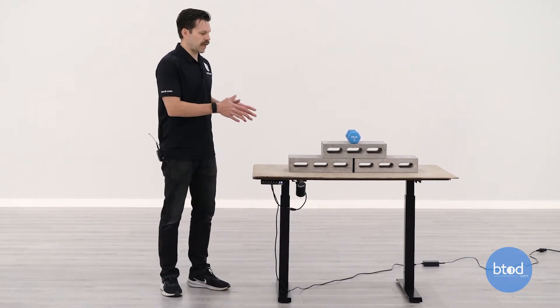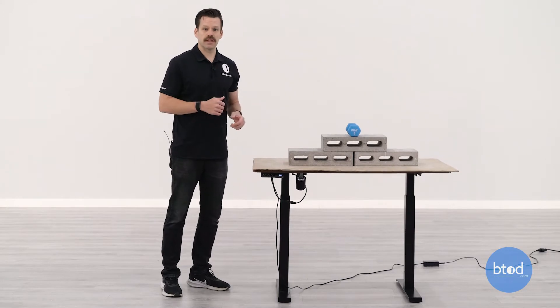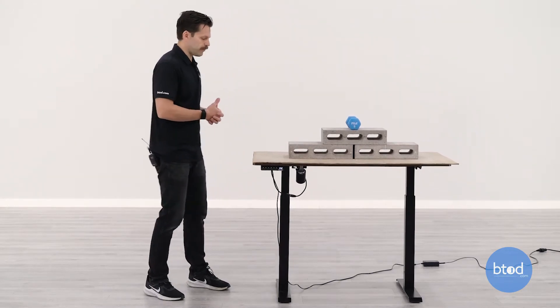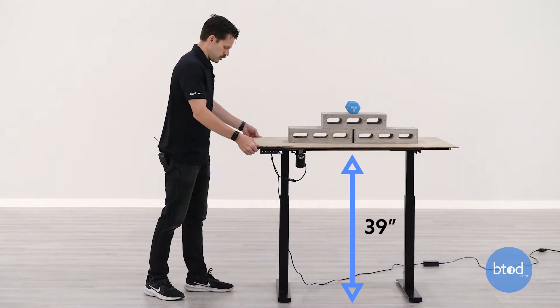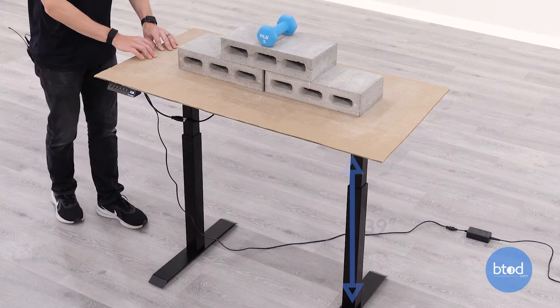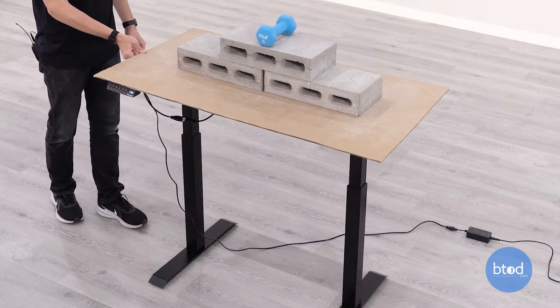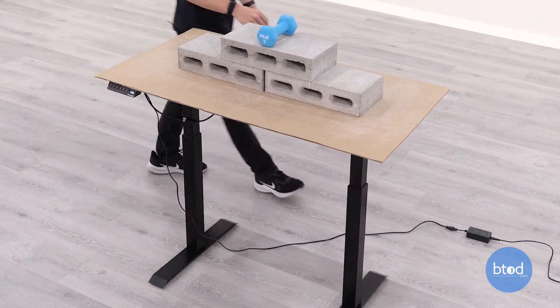39 inches is the average standing height for the average height female in the United States, which is about 5'4".